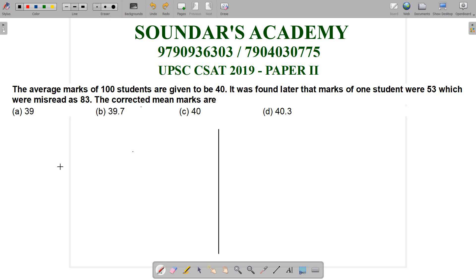First, formula method. The corrected mean mark equals old average, that's old mean, old average plus correct mark minus wrong entered mark.